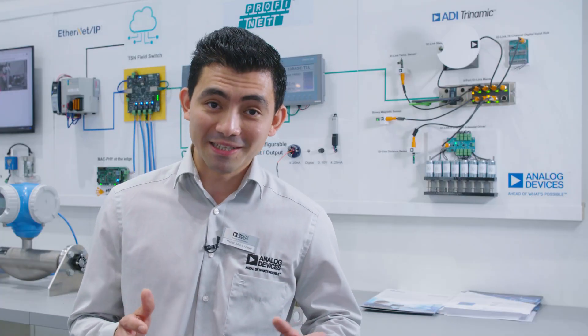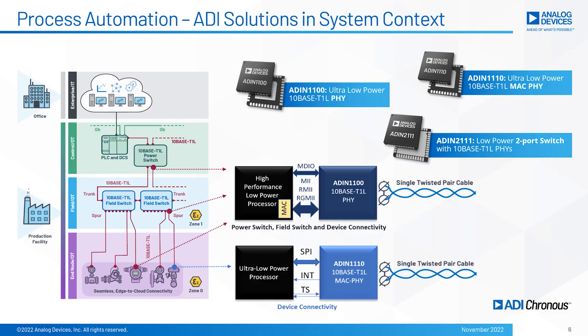This last technology, 10BASE-T1L, enables communication over a single twisted pair for cables of up to 1.7 kilometers, data and power over the same data line, and Ethernet devices even in intrinsically safe areas.